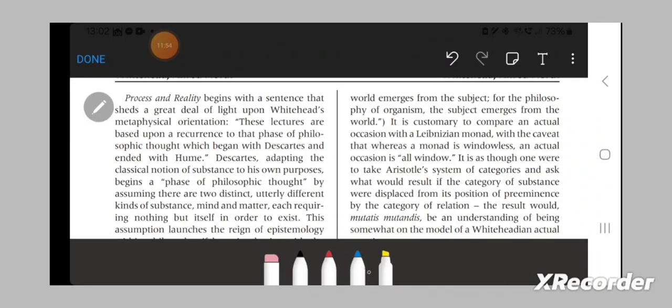Okay, so Process and Reality begins with a sentence that sheds a great deal of light upon Whitehead's metaphysical orientation. These lectures, as he said, are based upon a recurrence to that phase of philosophical thought which began with Descartes and ended with Hume.